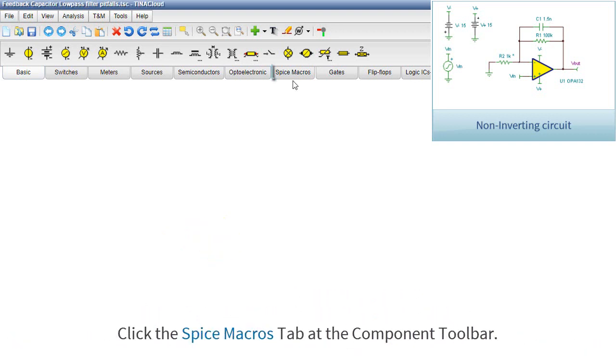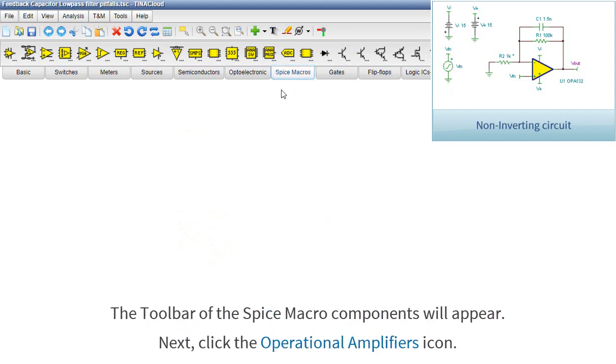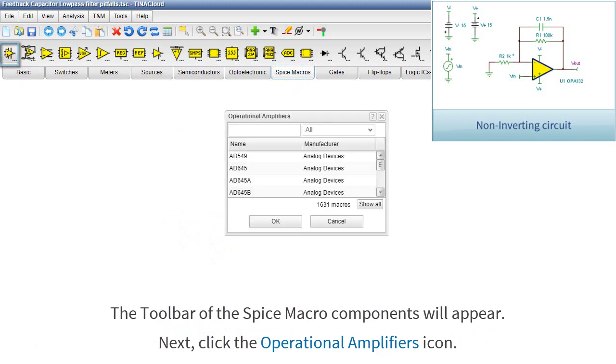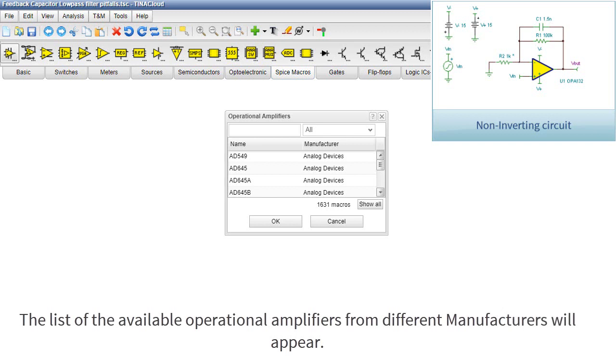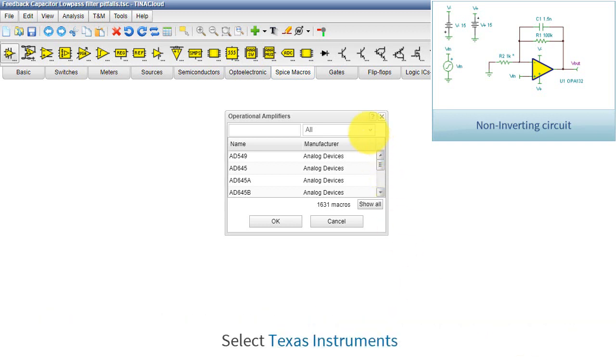Click the SPICE macros tab at the component toolbar. The toolbar of the SPICE macro components will appear. Next, click the Operational Amplifiers icon. The list of the available operational amplifiers from different manufacturers will appear. Select Texas Instruments.